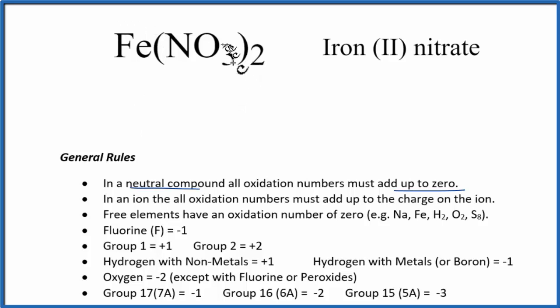The first thing to look at is this nitrate here, because with iron, that can have different oxidation numbers. It really depends what it's bonded to. So we can look at the nitrate and look that up on a table of common polyatomic ions. Because with an ion, all the oxidation numbers add up to its charge. So if we can find the charge on the NO3, on the nitrate, we'll know its oxidation number for this whole thing here.